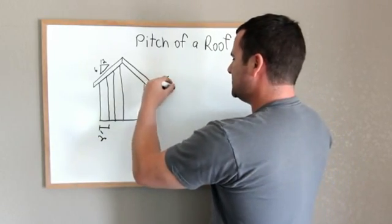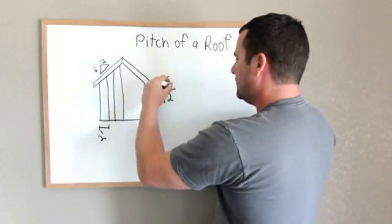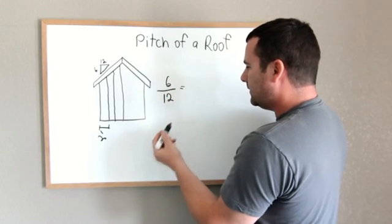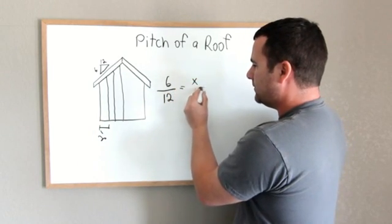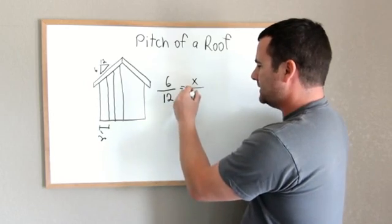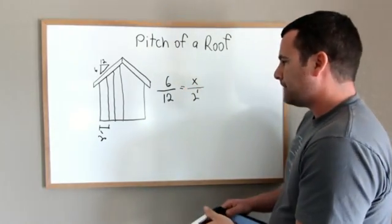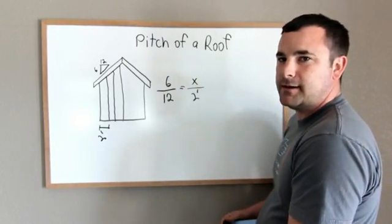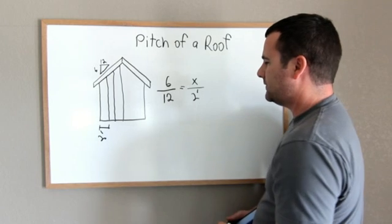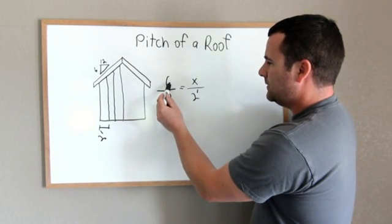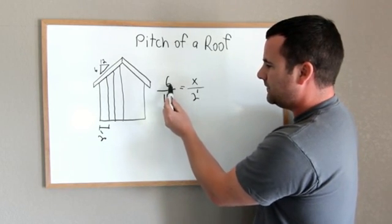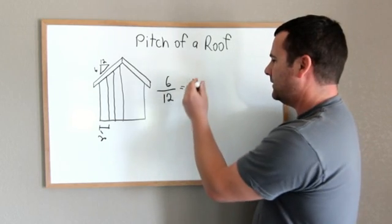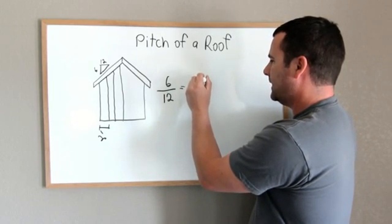So 6 over 12, rise over run, equals... and you want to figure out your rise. So we'll put that as x, and your run is 2 feet. Then you just cross multiply and divide to answer for x. So you just go 6 times 2 is 12, divided by 12 is 1. So x equals 1.